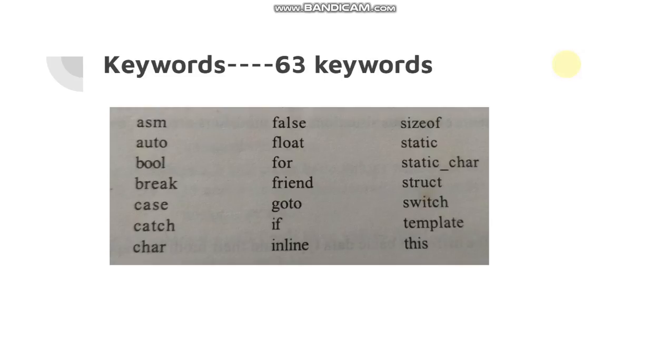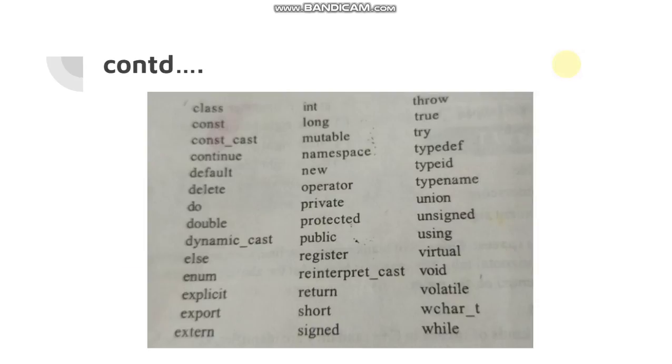Some of the keywords are asm, auto, break, case, catch, character, float, friend. Among these categories, character, break, float, friend, false, if, they are switch, they are the important ones. And again, class, that is also important. And double, return, public, private, protected, void. These are the important keywords that we regularly use.